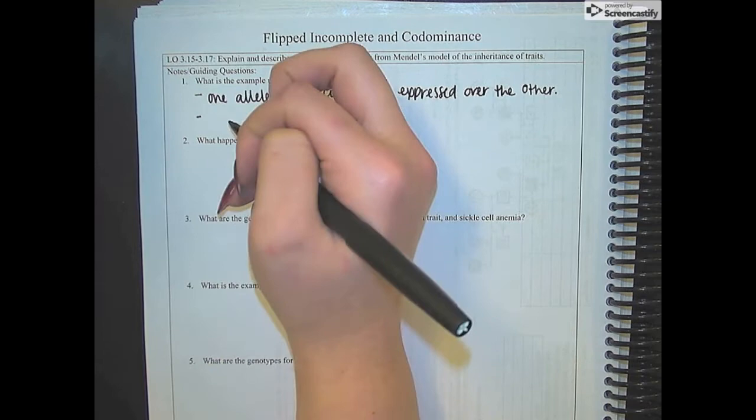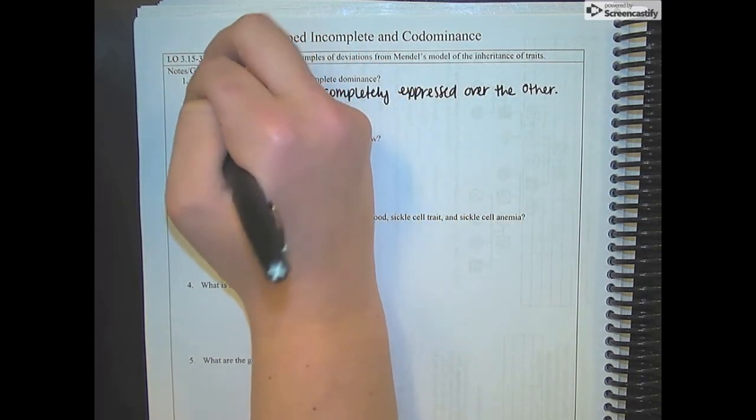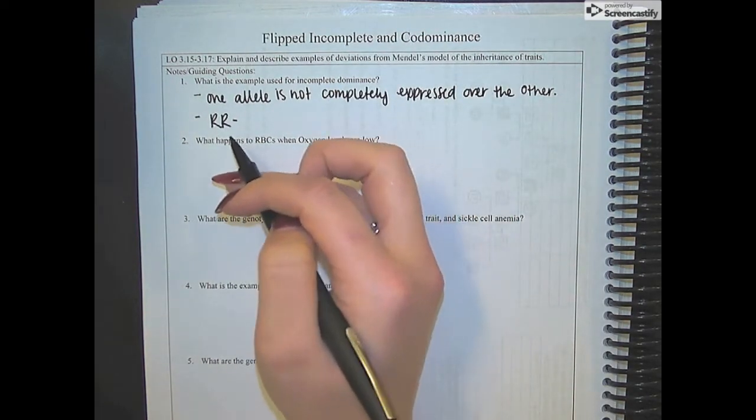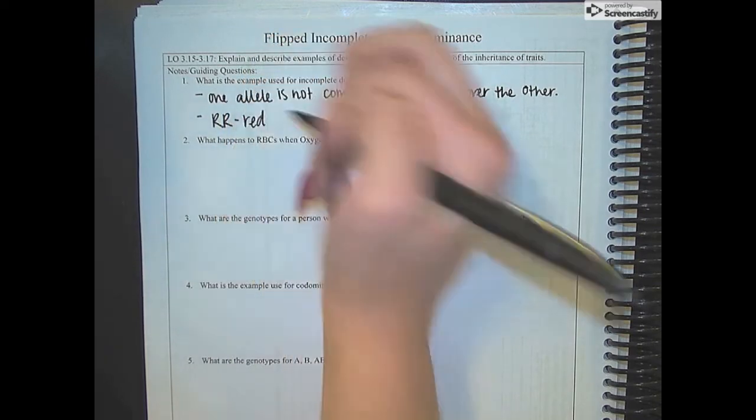And the genotypes that go with them are RR. So if there is a snapdragon that has two red alleles, that snapdragon is going to be red.